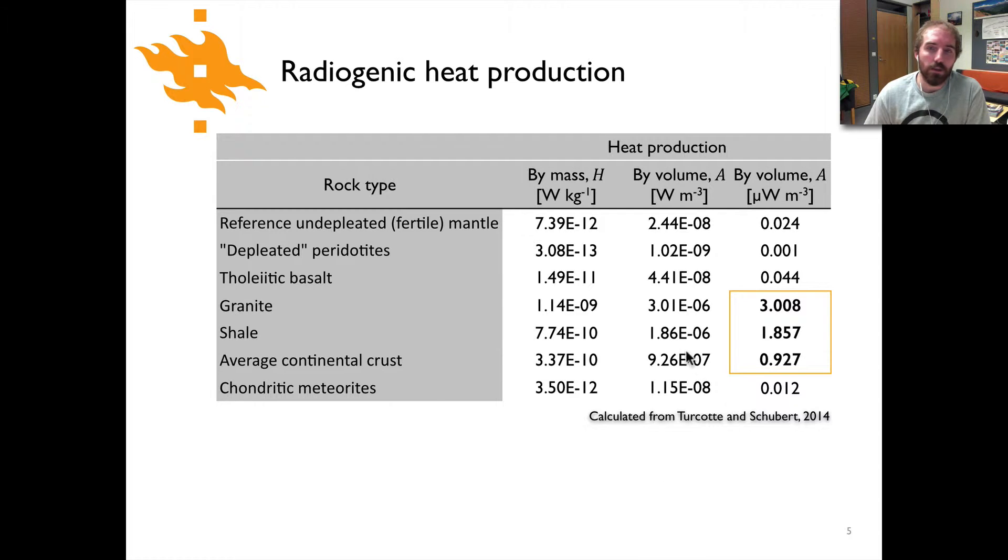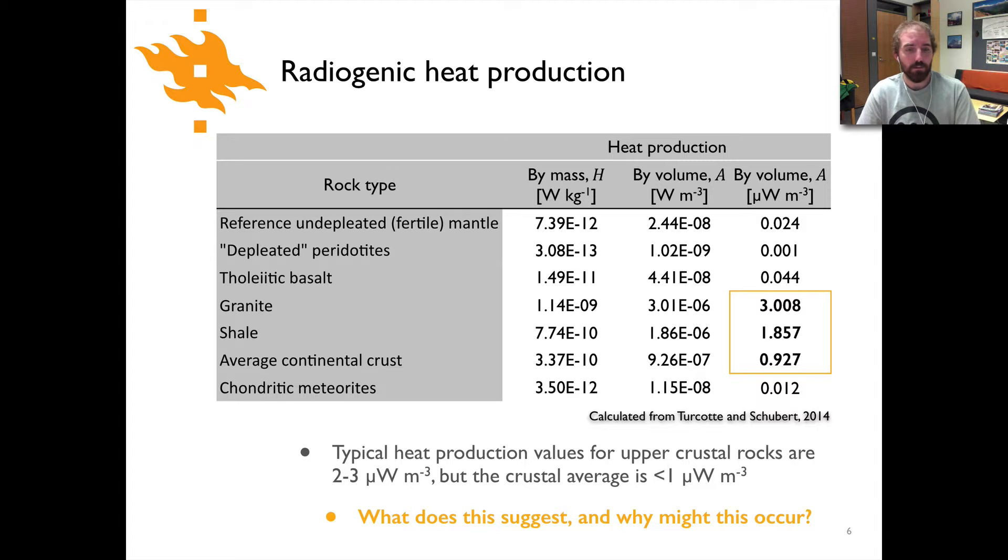This is the similar type of table to what we saw in the previous slide where we're looking at heat production here by mass in watts per kilogram, here by volume in the typical units that are used, which is microwatts per cubic meter. And so again you can see clearly here that we have certain rock types, granites, shales, and average continental crust where we have much higher heat production than we have in the other materials, in the more mafic materials.